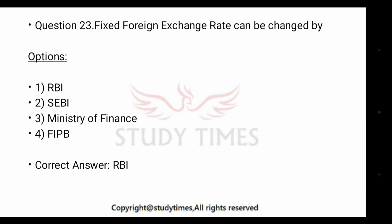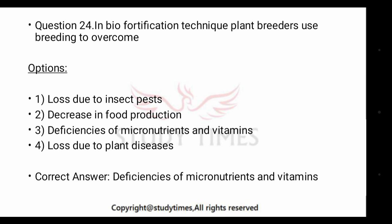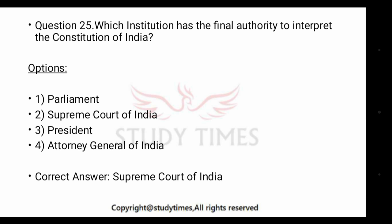Plant breeders use breeding to overcome dash — the answer is deficiencies of micronutrients and vitamins. Next question: which institution has the final authority to interpret the Constitution of India? The answer is the Supreme Court.